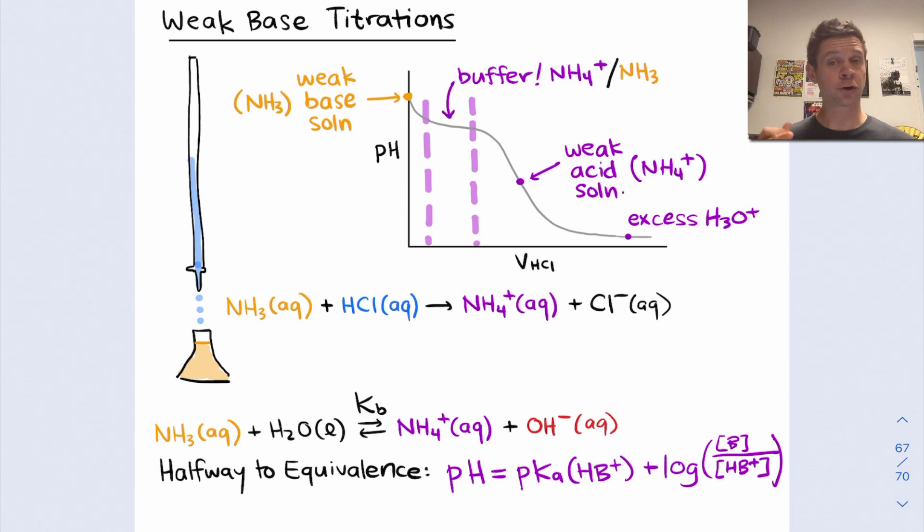In the buffer region, we can use the Henderson-Hasselbalch equation to calculate the pH of the analyte-titrant mixture. That says in terms of the conjugate acid HB+, the pH is equal to the pKa of the conjugate acid plus the base 10 logarithm of the base concentration divided by the conjugate acid concentration. But at halfway to equivalence, half of the B has been converted to HB+, so these two concentrations and these two numbers of moles are equal. This is, in essence, the definition of halfway to the equivalence point. So this ratio simply divides out to 1, and the logarithm of 1 is 0.